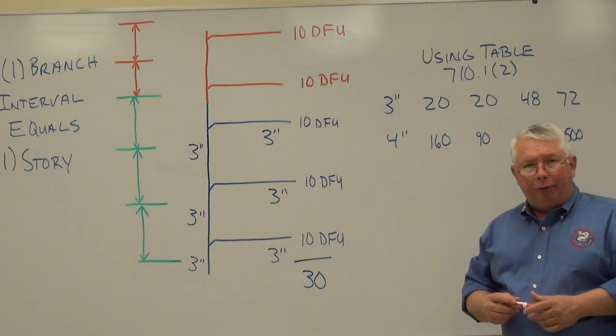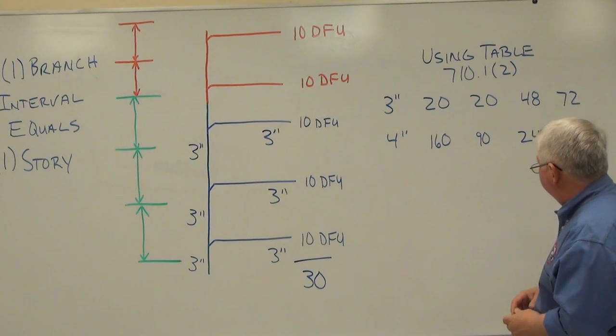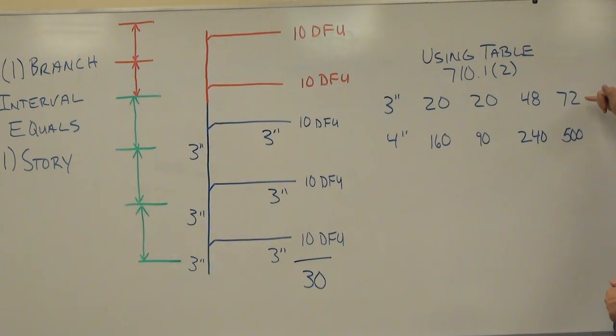In table 710.1 number two, if you look at the fourth column, it covers a three inch stack that's greater than three branch intervals in height and a four inch stack that's greater than three inch intervals in height.